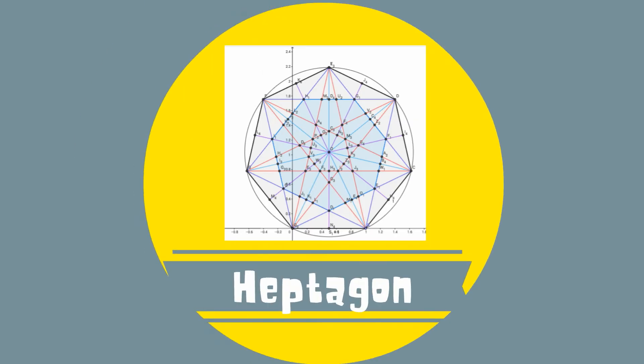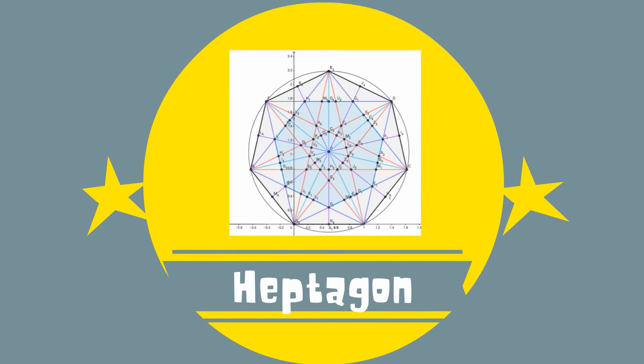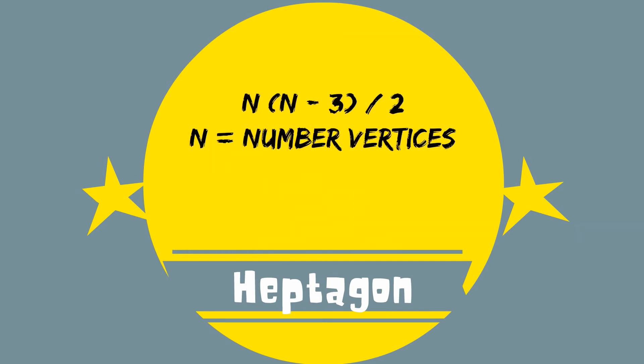A Heptagon has 14 diagonals. If you look carefully, they are the red lines. You can find the number of diagonals by using n times n-3 divided by 2, and n is the number of vertices.